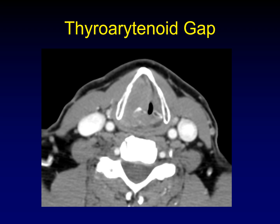What path does a cancer actually take when going from the larynx to the hypopharynx or vice versa? It tends to spread through the interval between the thyroid cartilage and the arytenoid cartilage — the thyroaretenoid gap. On the normal side this gap is very small, but once infiltrated by tumor it expands. The enhancing tumor separates the thyroid cartilage from the arytenoid cartilage in an expanded thyroaretenoid gap — this is a very important clue of spread between the larynx and the hypopharynx.